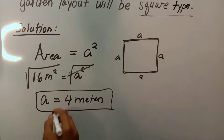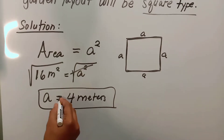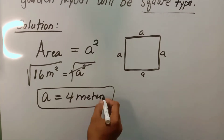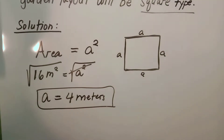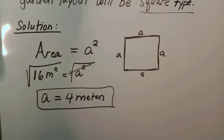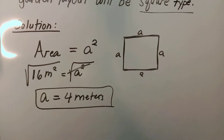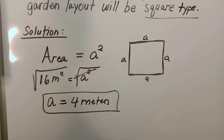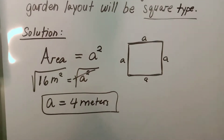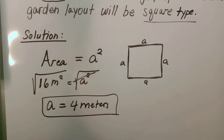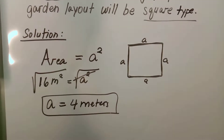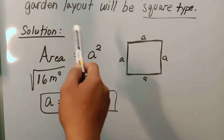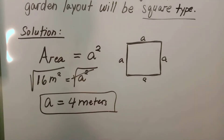So the length of each side of Mr. John's garden will be 4 meters. I hope you understood this simple problem regarding a square quadrilateral. Next, I will give you another example word problem — same square quadrilateral but a different type.